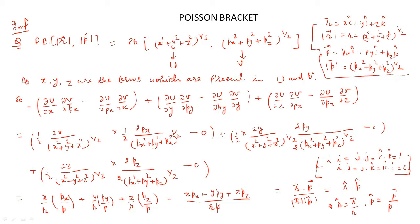This can be written as (x·px + y·py + z·pz) / (r·p). Now x·px + y·py + z·pz is the dot product of the position vector r and momentum vector p, so it equals r⃗ · p⃗. Dividing by the magnitudes r and p gives unit vector r̂ dotted with unit vector p̂, since a vector divided by its modulus becomes the unit vector.